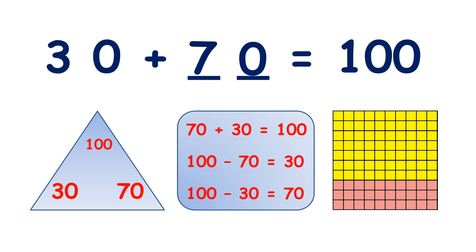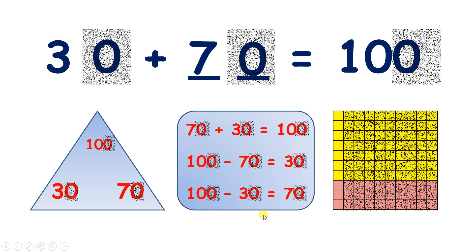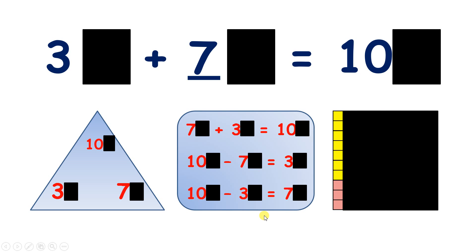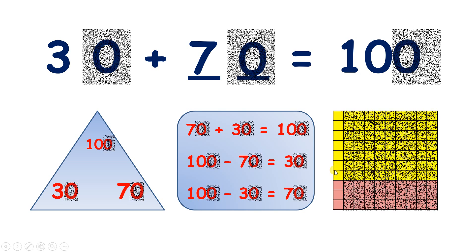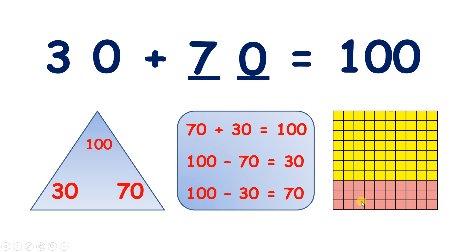So how is what we're doing here similar to number bonds to 10? Well, with number bonds to 10, we're looking at units. So if we have 3, we need 7 more to make 10. But with 10s, if we have 3 tens, then we need 7 more tens to make 10 tens or to make 100.